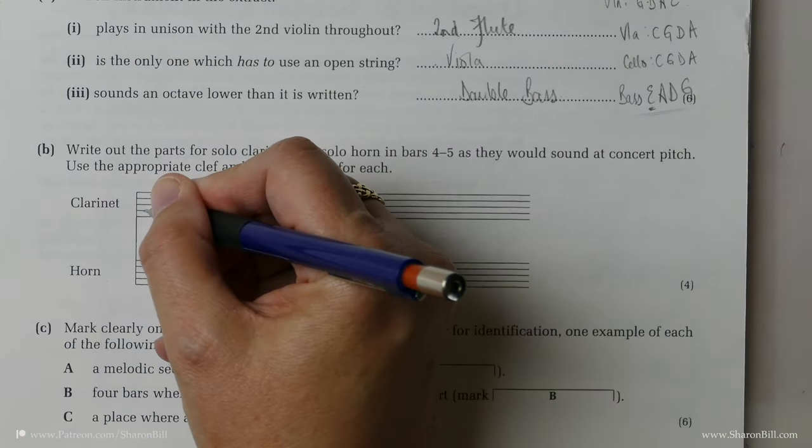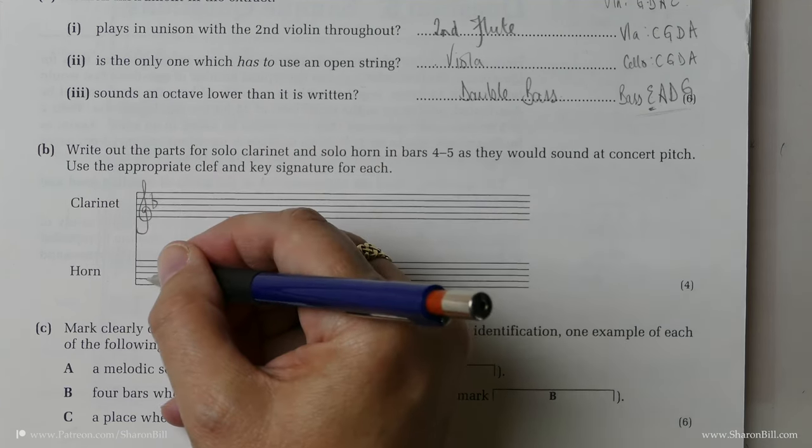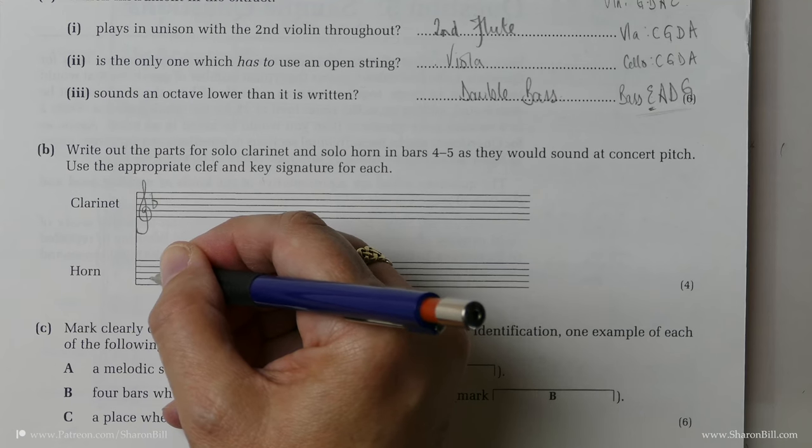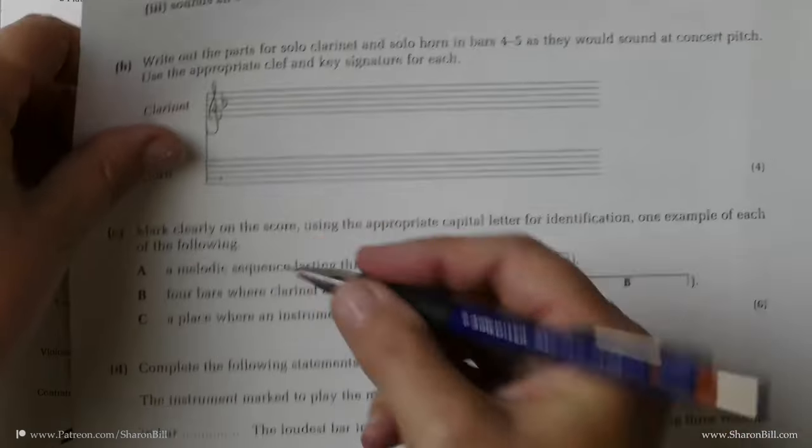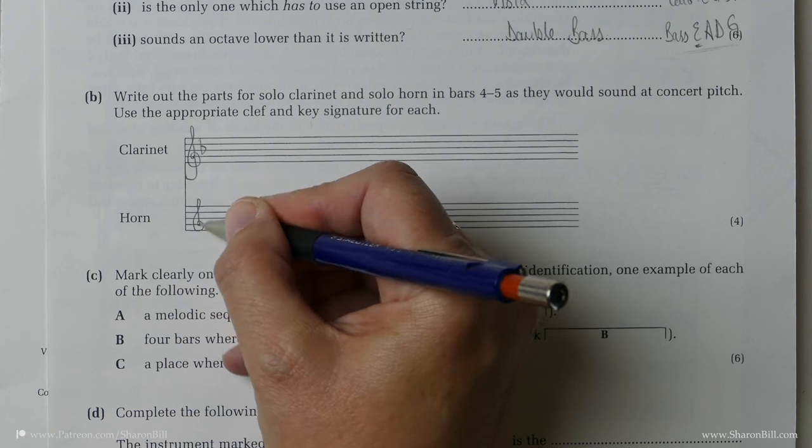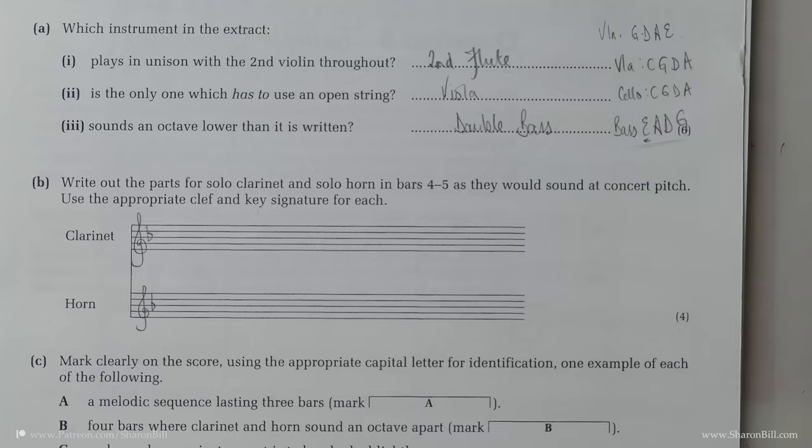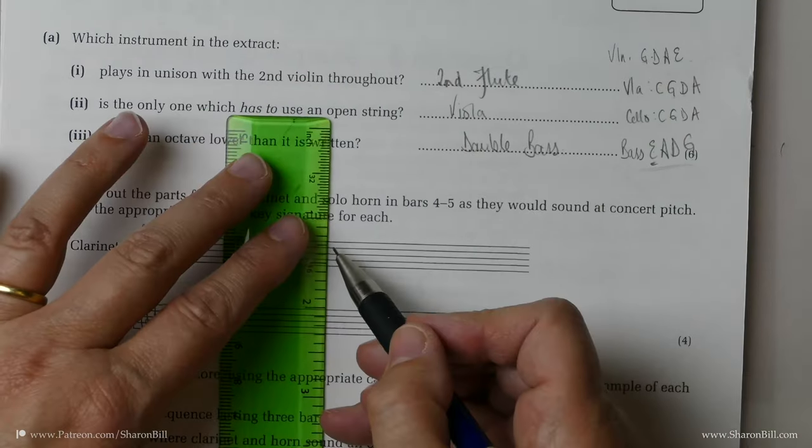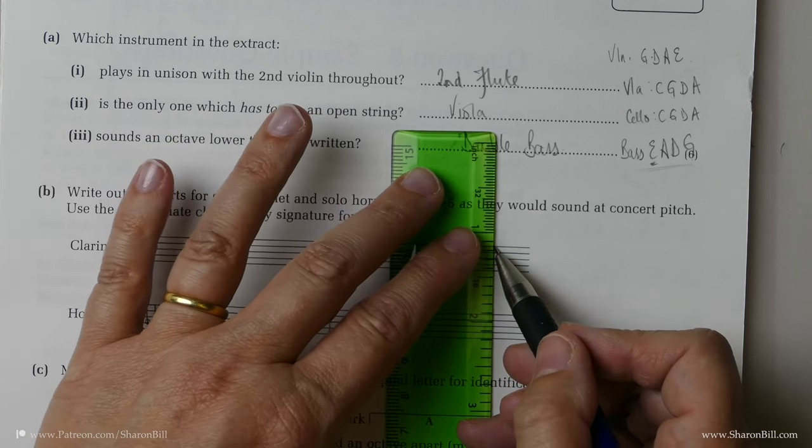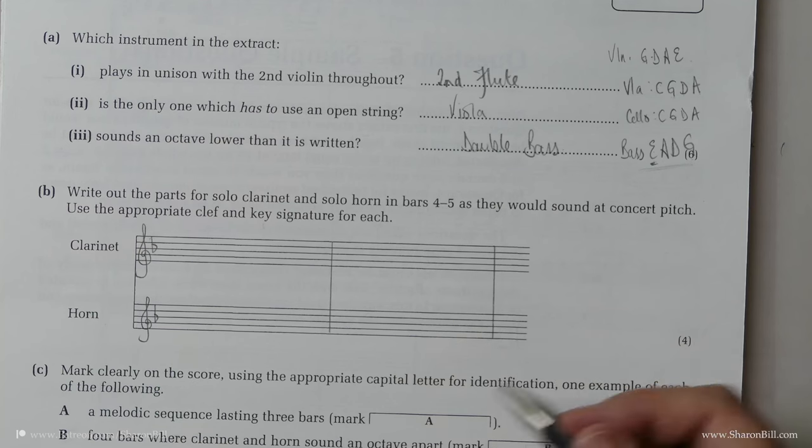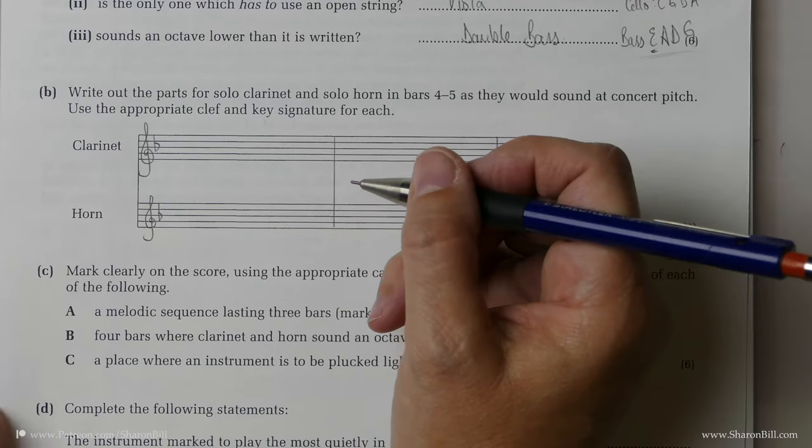So we want a clarinet sounding in the key of F major horn. And we're doing bars four and five. So let's give ourselves a couple of bars. So bar four and bar five, we want the two complete bars.